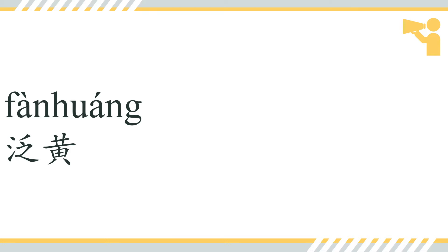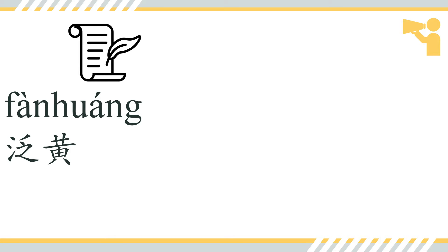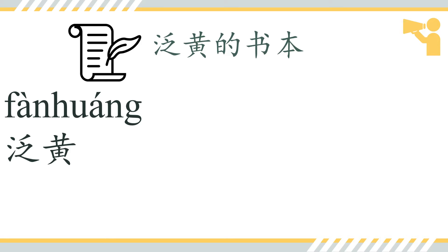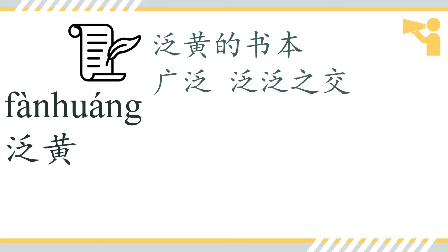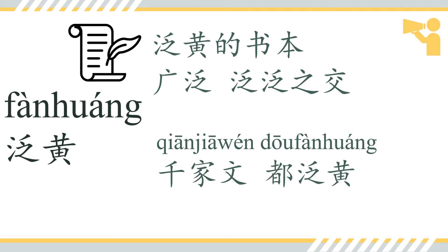泛黄, 泛黄 — 'the colour of yellow emerged,' and it also means 'getting aged.' 泛黄的书本. As 泛 has many meanings — float, wide, and emerge — we also have 广泛, meaning 'widely.' And 泛泛之交 — 交 means 'to make friends' — 泛泛之交 means 'just a passing acquaintance.' And here we have: 千家文都泛黄.